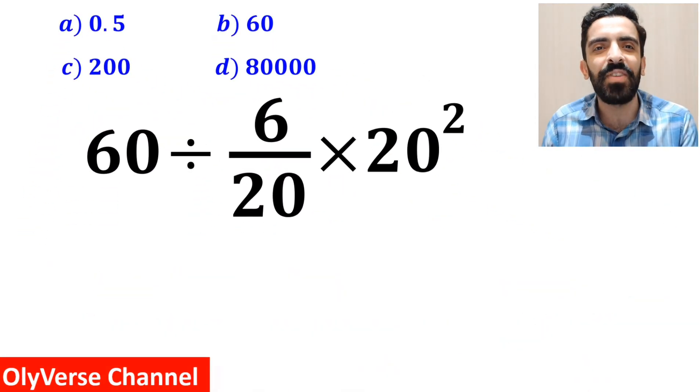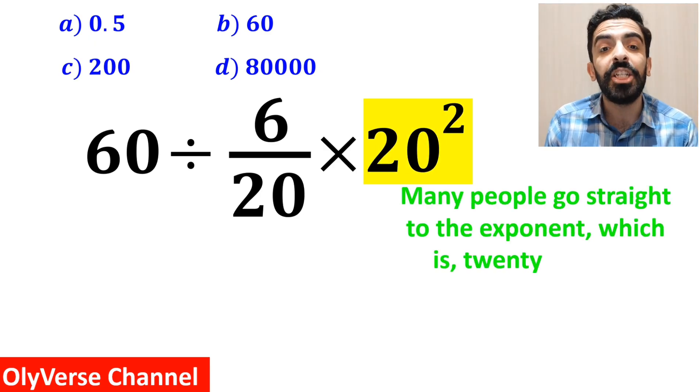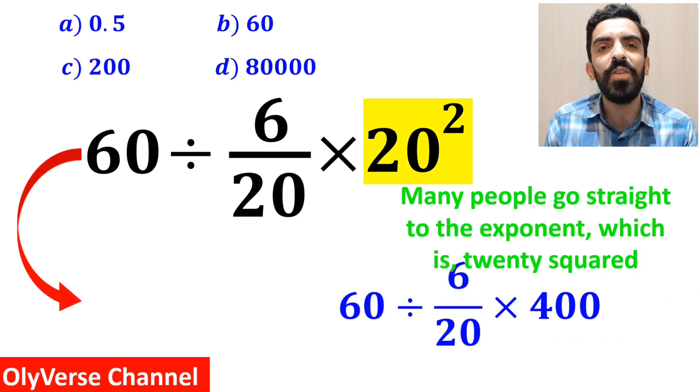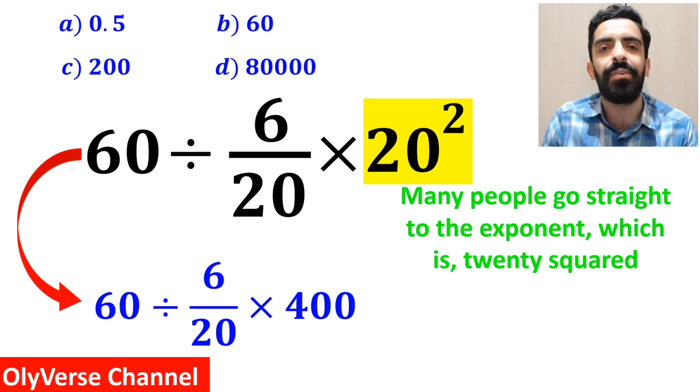Let's break it down and solve it together. The first step most people take is going straight to the exponent, which is 20 squared, and simplify the whole expression to 60 divided by 6 over 20 times 400.